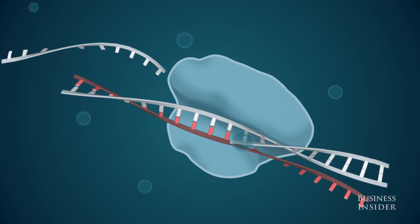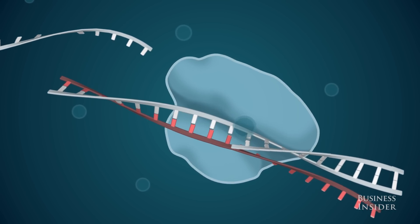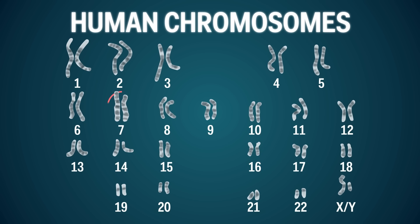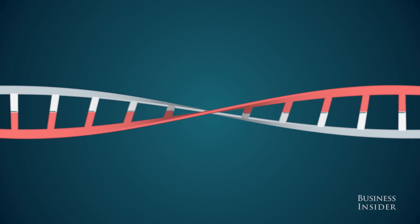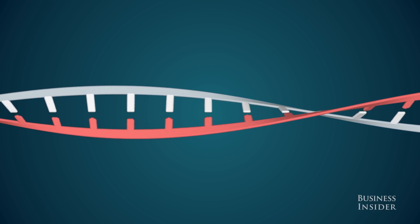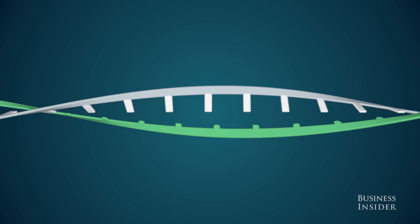This could allow you, for example, to fix a defective gene if somebody has cystic fibrosis. In theory, you could use CRISPR to repair the gene that's faulty in them and then they would not suffer from cystic fibrosis any longer.